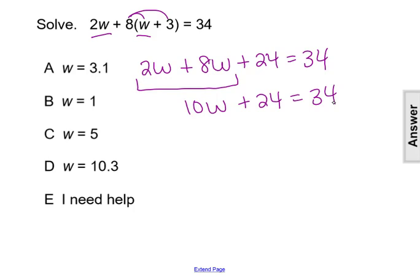Right now the variable is being multiplied by 10 and added by 24. So first we'll undo adding 24 by subtracting 24. And we'll do it to both sides of the equal sign, keeping the equation balanced. That will leave us with 10w equals 10.